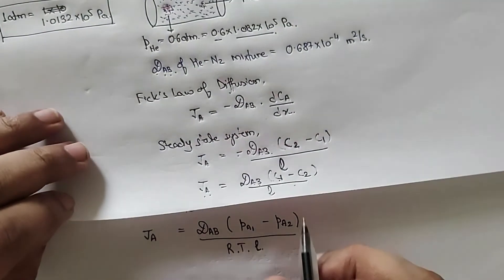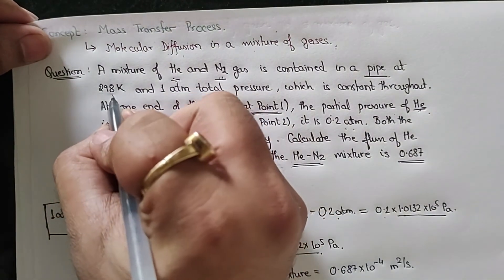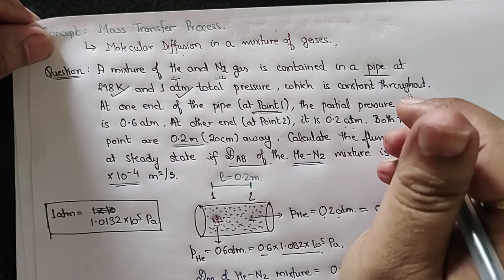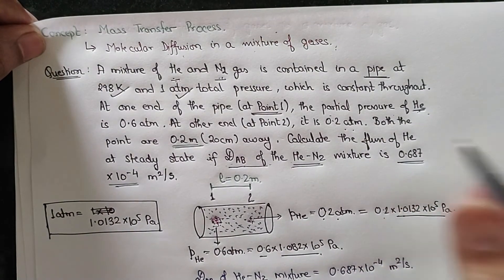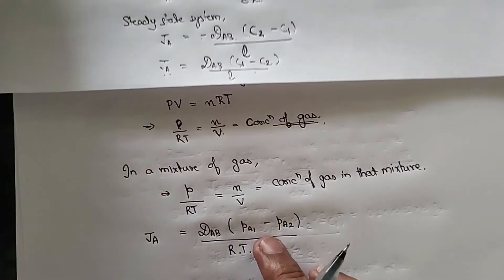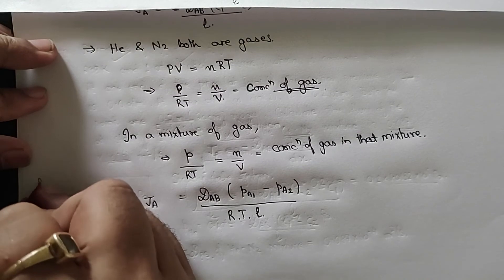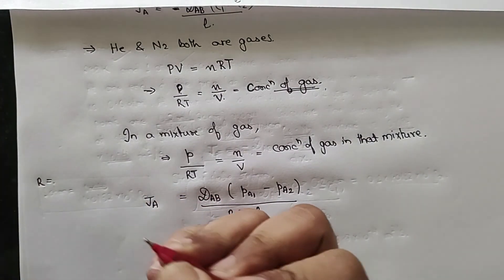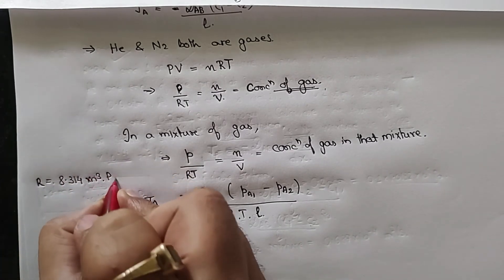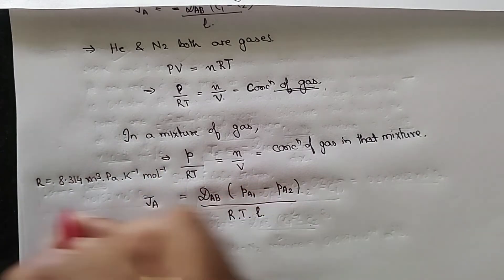Coming back to the numerical, the temperature and total pressure are given, and the gas constant R is a known value. R equals 8.314 m³·Pa/(K·mol). This is the value of R — you should remember it, as it typically won't be given in exam questions.